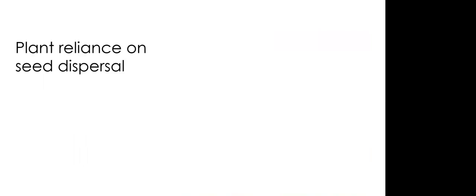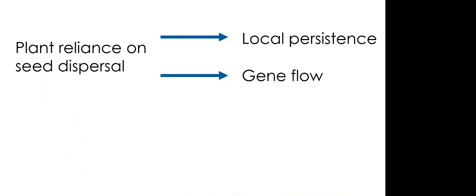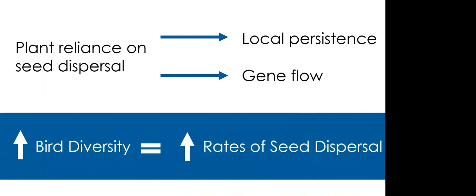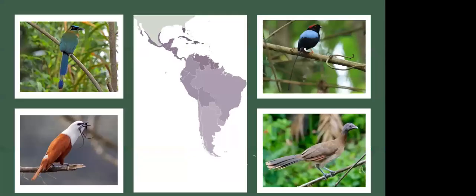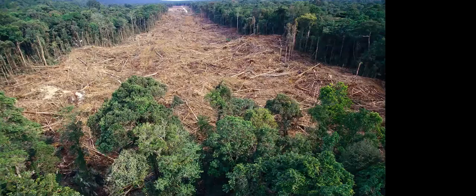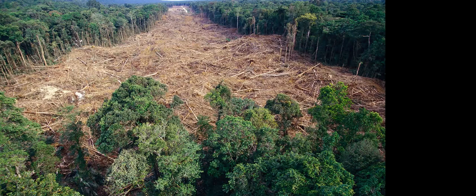Birds perform many important ecosystem services including pollination, pest control, ecosystem engineering, energy flow, and most importantly seed dispersal. Seed dispersal occurs mostly from fruit consumption but can also result from scatter hoarding. Plants rely on seed dispersal for local persistence as well as gene flow. Areas with greater diversity have been found to have higher rates of seed dispersal. Neotropical ecosystems host numerous species of bird and have a strong degree of frugivory - in other words, a large proportion of the bird community consumes fruits either obligatorily or opportunistically.